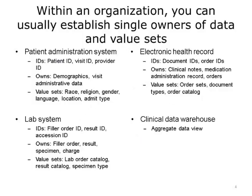Within an organization, you can usually establish a single owner or signing authority of a particular kind of data. Owners are the sole creator and updater of a particular kind of data. In a hospital, it could be established that the admissions office owns patient administration data, and the system they use is the patient administration system. The IDs generated by that system — like a patient ID, a visit ID, or a provider ID — can only be generated by that system. Demographics and visit data can only be updated on the patient administration system. The admissions office might also own value sets such as admission types — for example, inpatient, emergency, ambulatory — and changes must be done on the patient admission system.